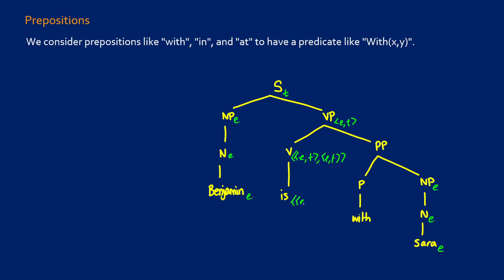So 'is' is going to be the same thing: (et)(et). In terms of the prepositional phrase, we're putting something into (et)(et) and getting an et out, which means our prepositional phrase is going to be et. Now, for the preposition, we have the noun phrase e coming in and becoming a prepositional phrase et, which means the preposition is going to be type (e)(et). What this is basically saying is that we have two entities and that becomes a truth value — so we're going to get something like lambda y lambda x dot x with y. The preposition 'with' would be x with y, 'at' would be x is at y, and so on.